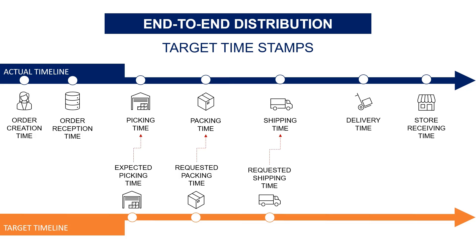Requested shipping time is when the warehouse is supposed to transfer the responsibility of the shipment to the transportation team. And finally, the requested delivery time — this is the main KPI linked to your on-time-in-full KPI. This is when the responsibility of the logistics team is supposed to end. To measure the performance at each process, you have to check if the actual timestamp is before or after the target.